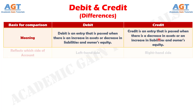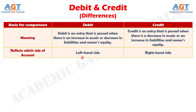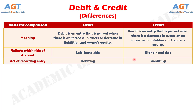Number 2: the act of recording entries on the left side is known as debiting the account. As against, the act of recording the entries on the credit side of the account is called crediting the account. Number 3: the act of recording an entry in debit is called debiting and recording an entry in credit is called crediting.